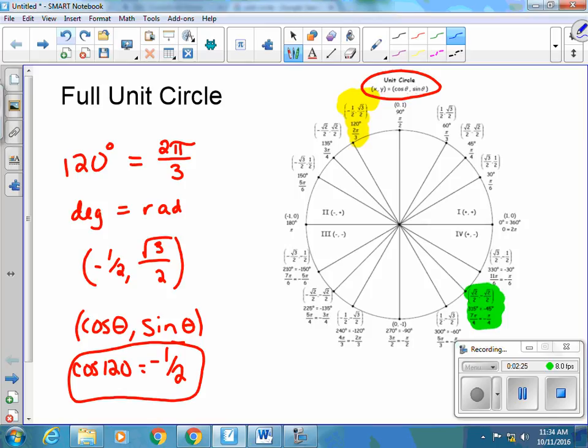It still gives you the radian measure. If you're in the positive direction, it'd be 7 pi over 4. If you're in the negative direction, it's negative pi over 4. So all you're doing is using your unit circle in order to calculate different values of sine and cosine.